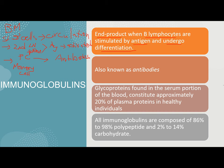Your antibodies or immunoglobulins are the end product when B lymphocytes are stimulated by antigen and undergo differentiation. In the bone marrow, the small lymphocytes would mature to become B cells, go to the circulation, then to secondary lymphoid organs such as the lymph nodes and the spleen. If they encounter an antigen, they become activated — either a plasma cell or a memory cell. If they become a plasma cell, they would start secreting antibodies. Immunoglobulins are also known as your antibodies.